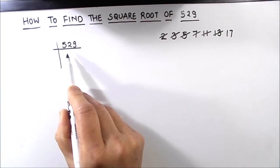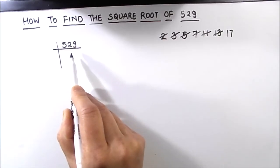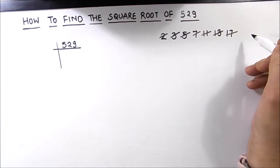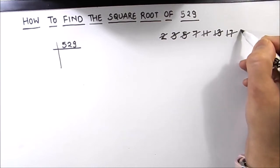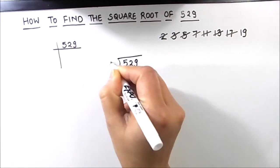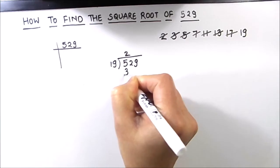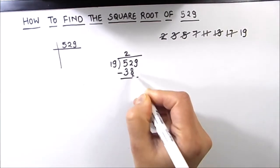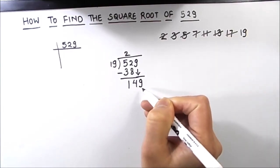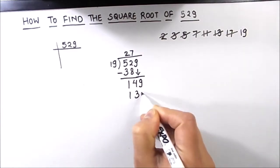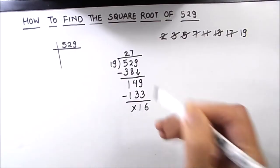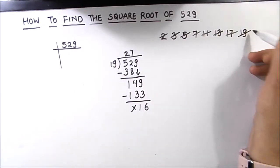The next prime number is 17. Checking: 17 times 3 is 51, remainder 1; this becomes 19, which is not fully divisible by 17. So 17 is also not a factor. The next prime number is 19. Dividing 529 by 19: 19 times 2 is 38, remainder 12; dropping down 9 gives 149, and 19 times 7 is 133, remainder 16. So 529 is not fully divisible by 19 either.